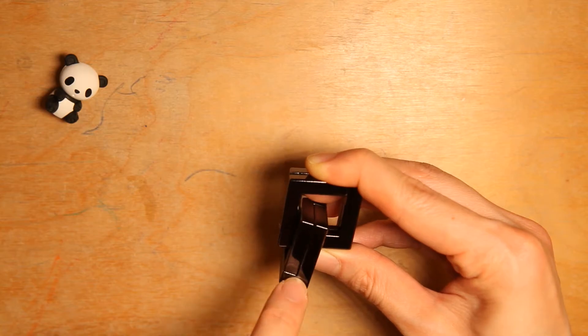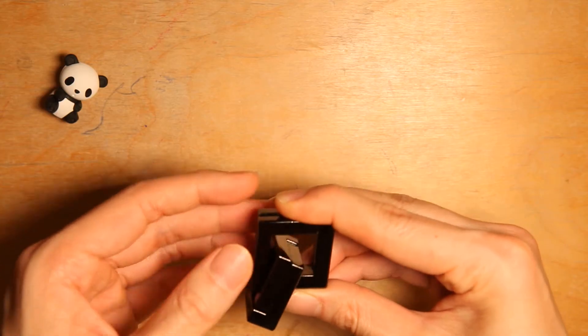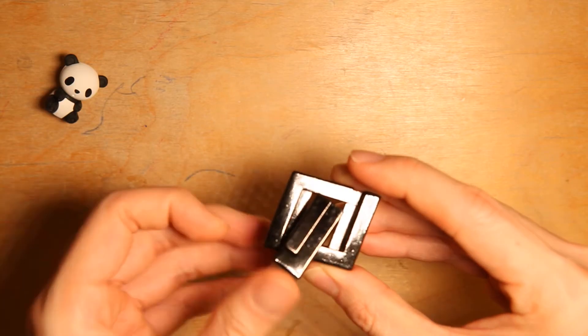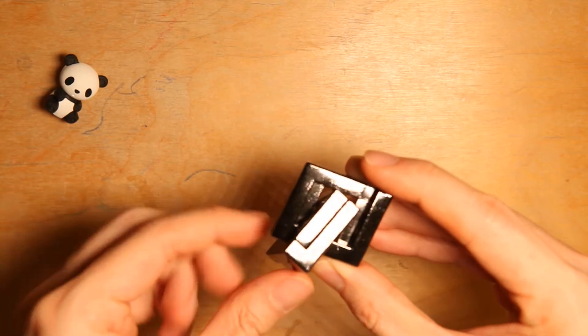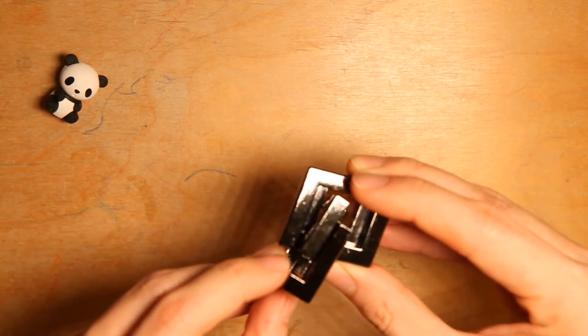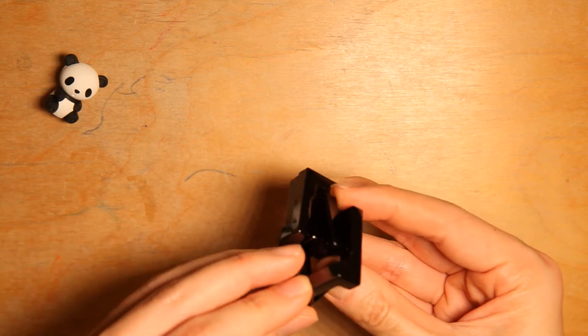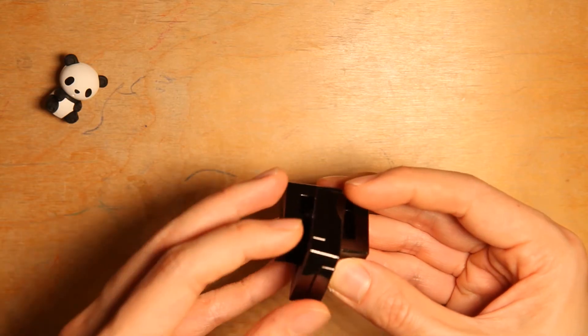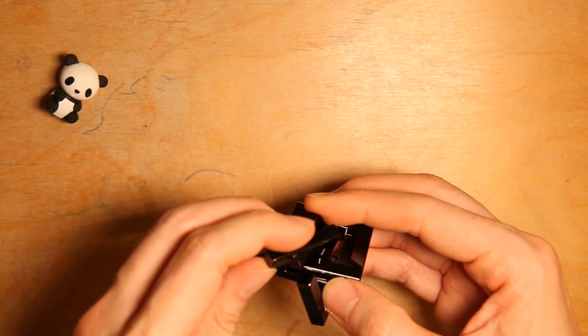Now what you have to do is open the Hanayama pair slightly like so and move this piece of the Quartet pair over the other piece. What you have to do is allow this piece to go into this opening and move the pair over, like so.